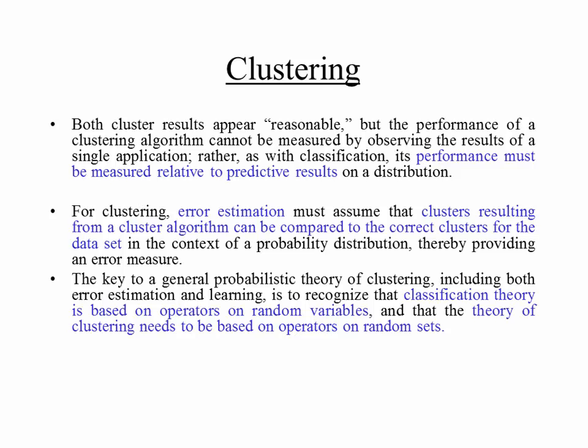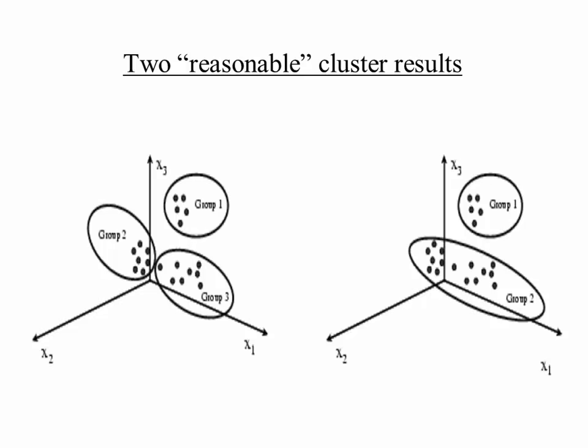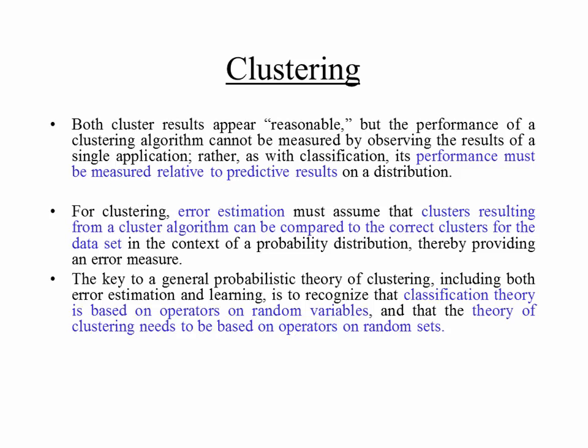Both clusterings appear to be reasonable, but the performance of a clustering algorithm cannot be measured by observing the results of a single application. Rather, as with classification, performance must be measured relative to predictive results on a distribution. For clustering, error estimation must assume that clusters can be compared to the correct clusters in the context of some probability distribution, thereby providing an error measure.